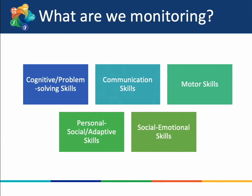There are five main areas of development that we think about to understand if a child is growing and developing as expected for their age. Cognitive skills are how a child thinks and solves problems and how they play — for example, exploring objects with their senses, banging objects together, or building with blocks. Communication skills are how a child understands and speaks with language, including words or signs, and include receptive communication — understanding others' speech — and expressive communication — the ability to communicate with words or signs.